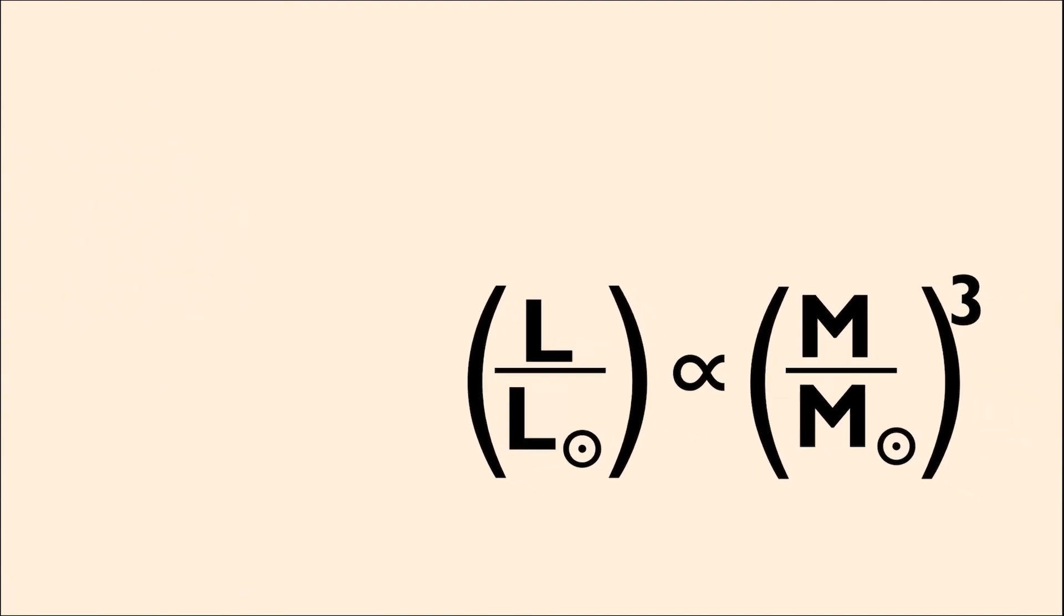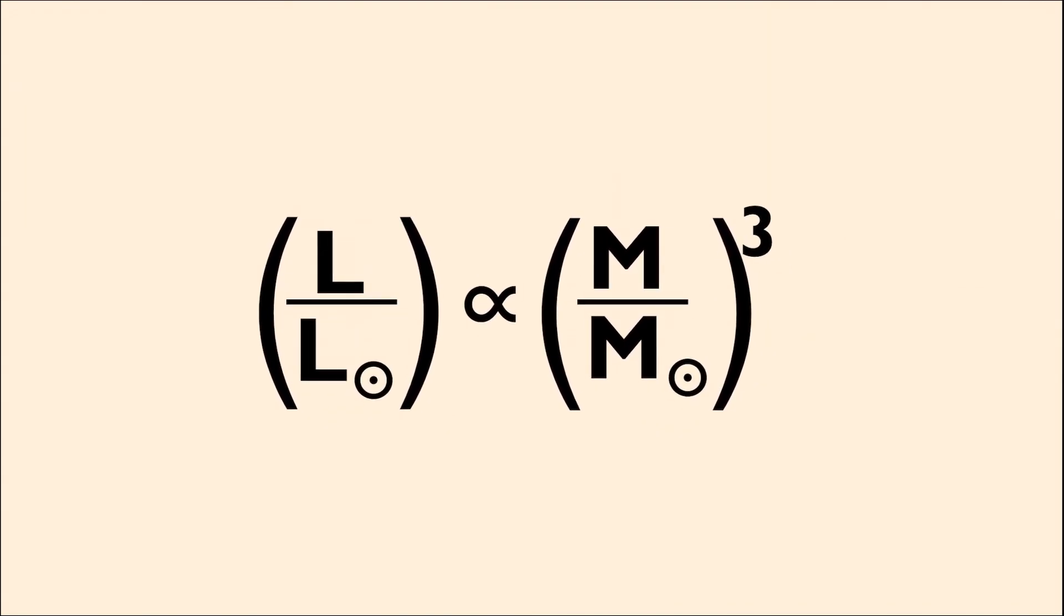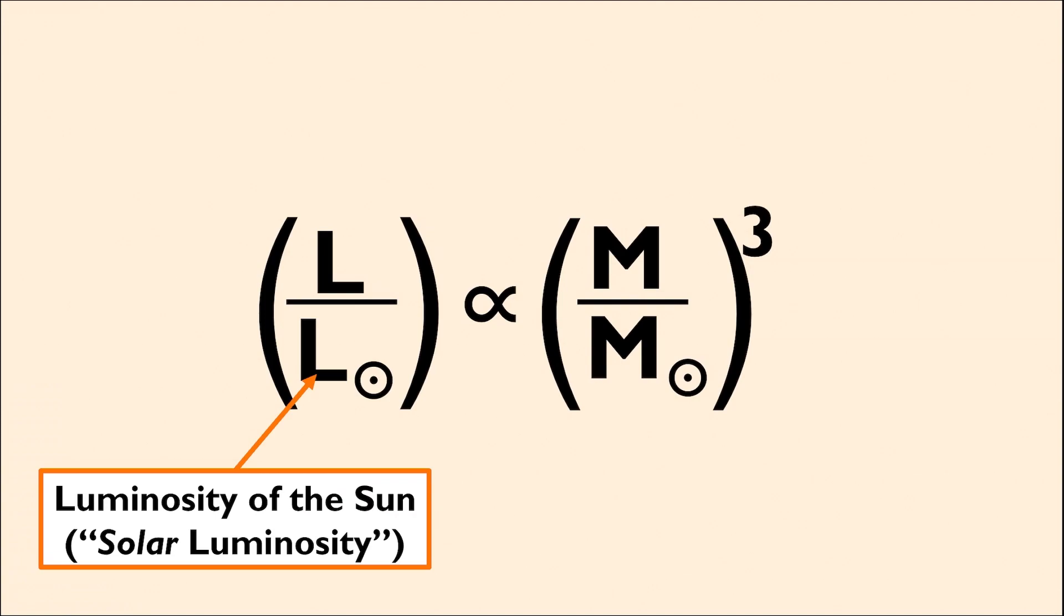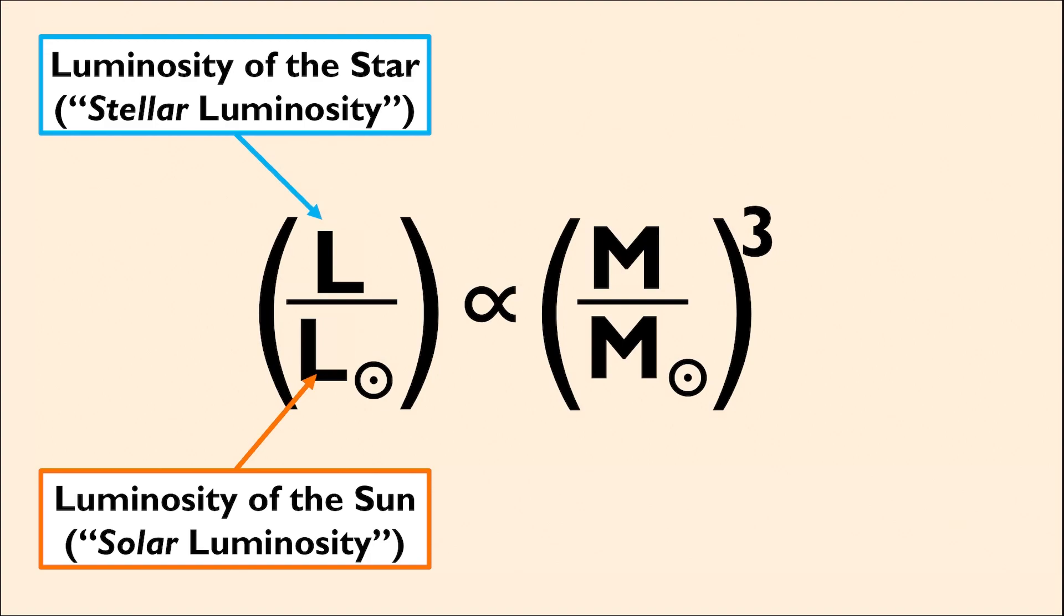In the denominator of the fraction on the left, we have the luminosity of the Sun, which is useful to include since the luminosity of the star in question, or the stellar luminosity, is always given in units of solar luminosities to get a sense of how luminous it is compared to the Sun.